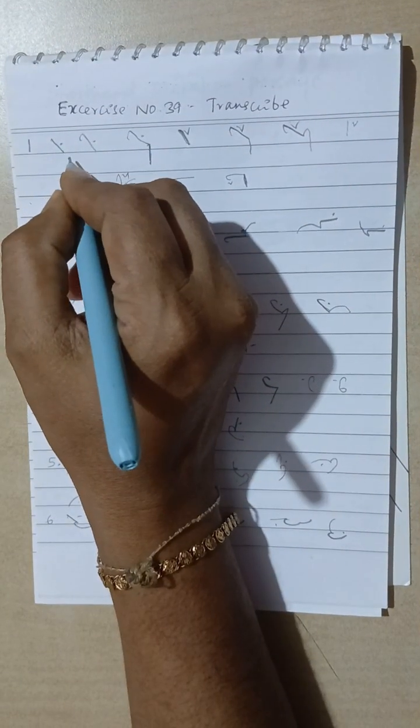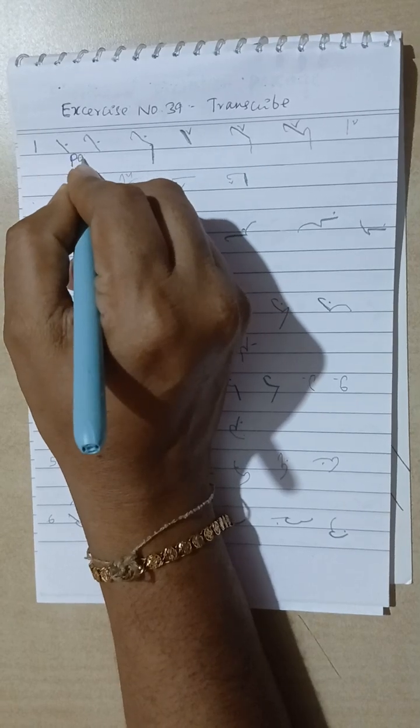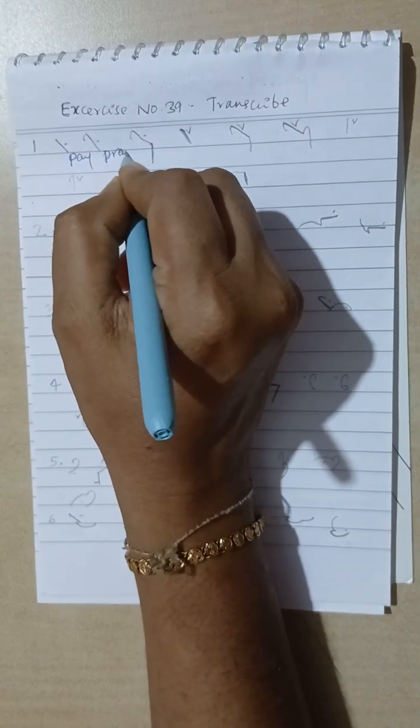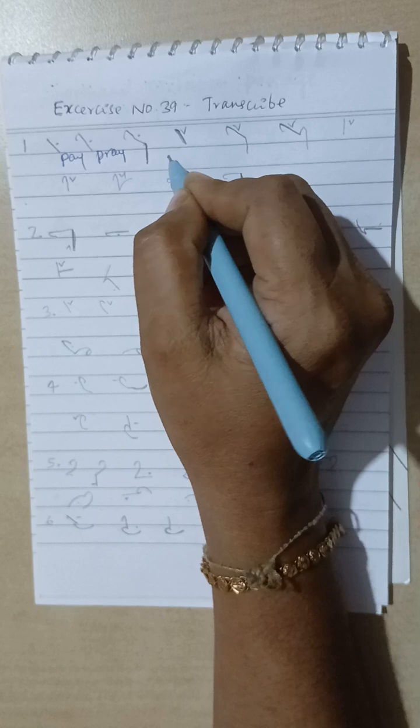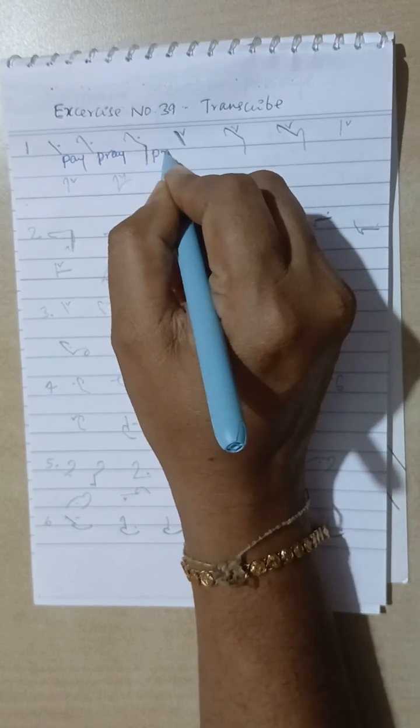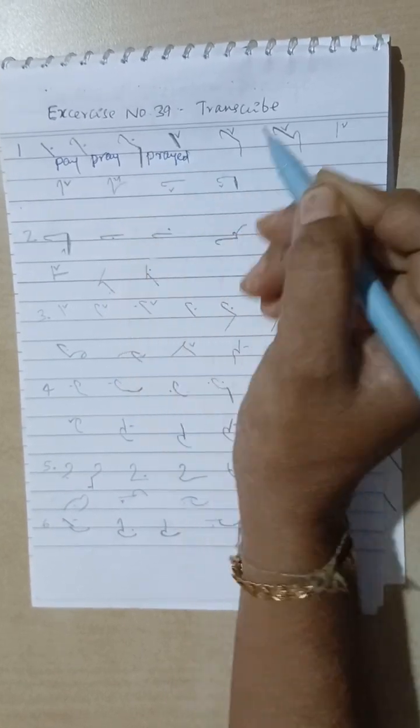Pay, P-A oval, pay. Pray, Per, A oval, prayed. Pray, Per and D.